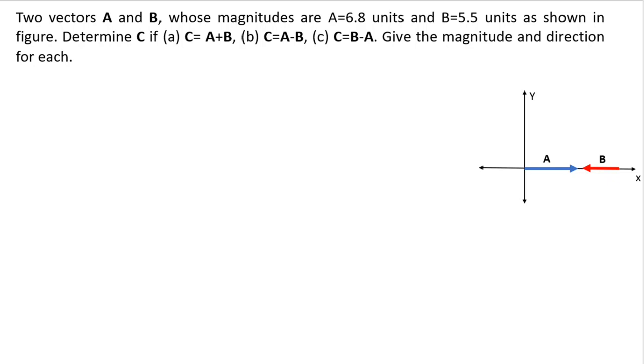Two vectors A and B, their magnitudes are given. Vector A is in positive x-axis with magnitude of 6.8 units, while B has magnitude of 5.5 in opposite direction in negative x direction. There are three parts in the problem.